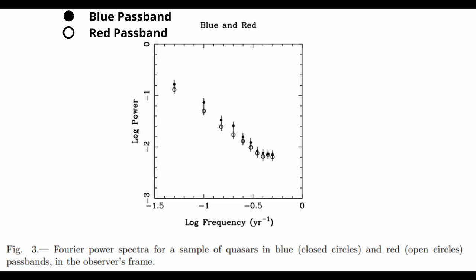In this diagram, we can see the power spectra for a sample of about 200 quasar light curves, in blue and red passbands. If there were a correlation of timescale with wavelength, then the two power spectra should be separated by 0.18 on the log scale, corresponding to the effective wavelength of 436 nm and 665 nm for the blue and red passband.